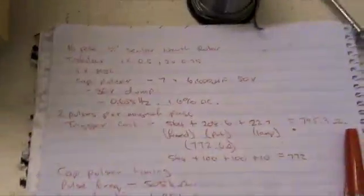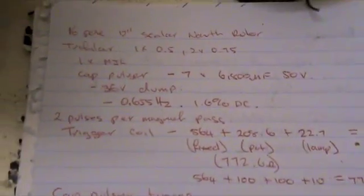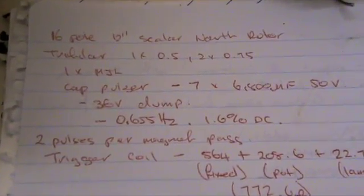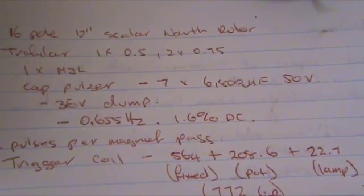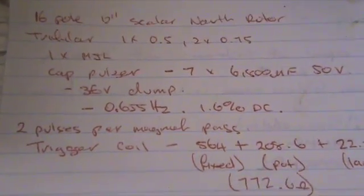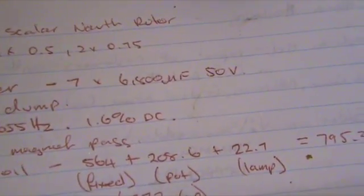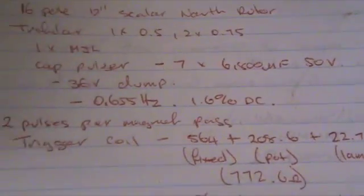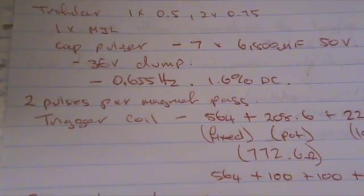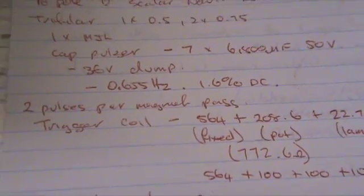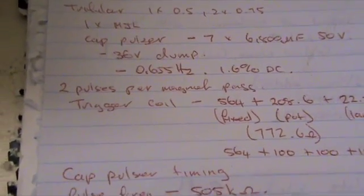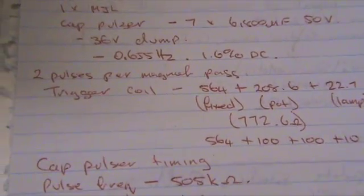This is what I wanted to come up. Some of the specs I've had. 16 pulse, 12 inch Scala North Rotor. Tri-follow 1 by 0.5 millimeter, 2 by 0.75 millimeter. 1MJL. Cap pulse so goes into 7. 6800 microfarad, 50 volt. 36 volt dump. 0.655 hertz frequency with a 1.6% duty cycle at two pulses per magnet pass.